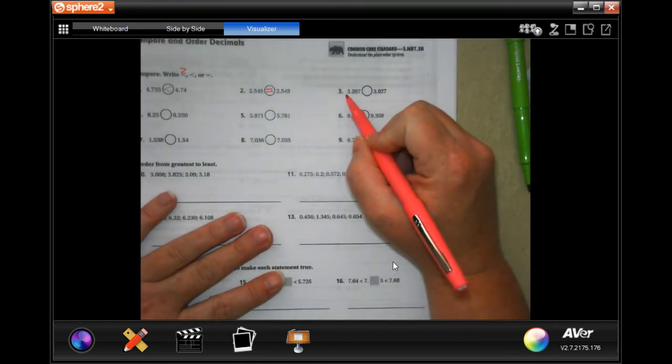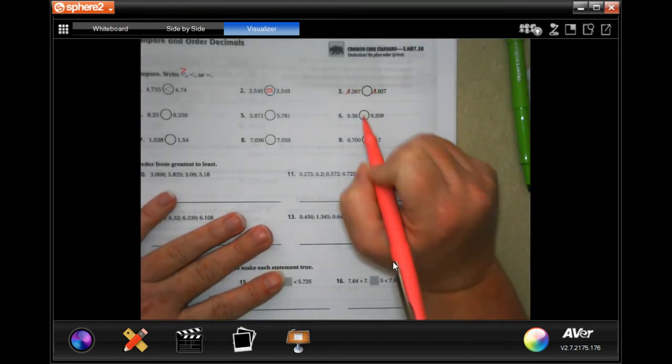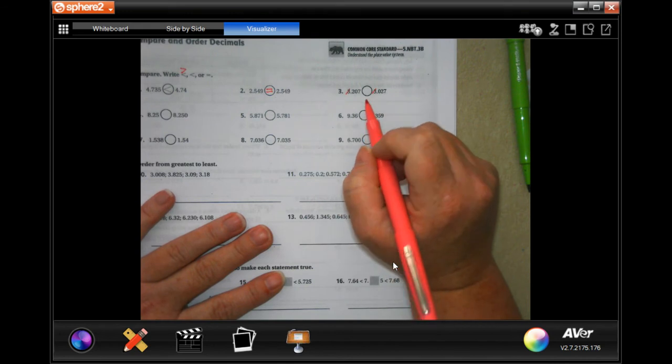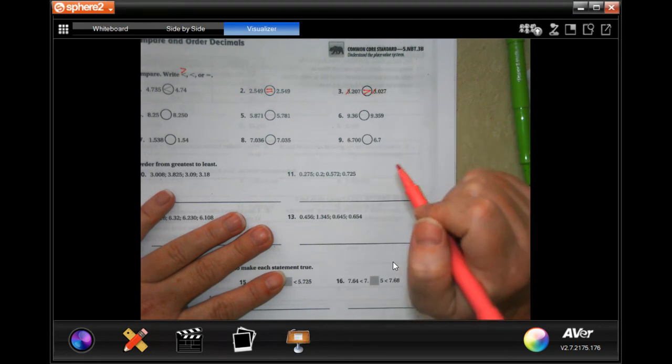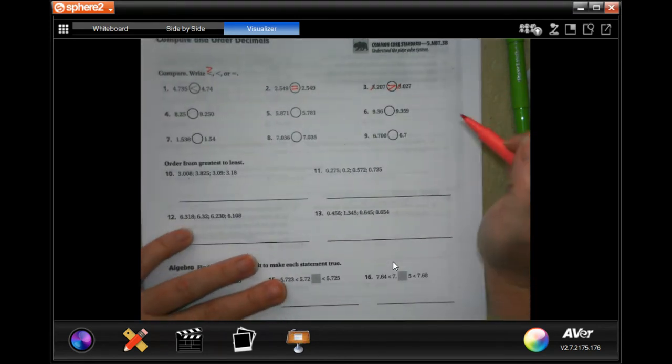Number three, they both start with three. I'm just going to cross that off. The next one, that's a two and that's a zero. That makes this one bigger. Done.